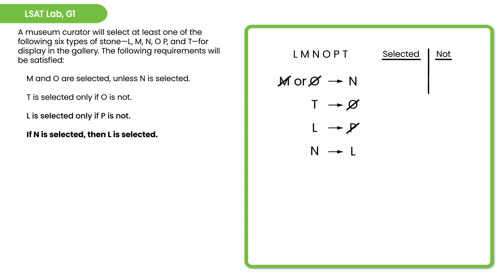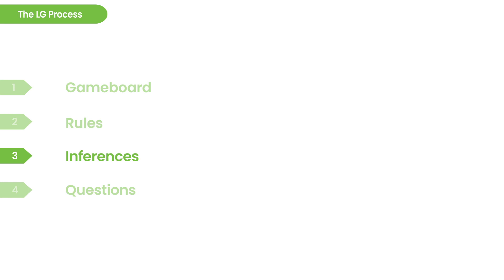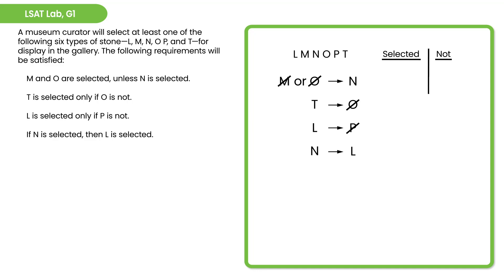Next step: make inferences. On in-out grouping games, inferences generally consist of connecting the if-then relationships — just like in a tree ordering game where you build a tree from relative relationships. In an in-out grouping game, we want to connect the rules together using the common terms across the different rules. For example, if M is not selected or O is not selected, then N is not selected. We create spaces for M and O independently in our bigger visual map.